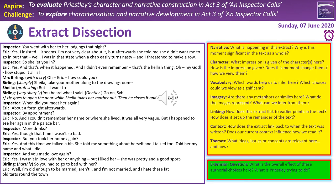That brings us to our extract for today's session. This is an important moment — it's very much about Eric being interviewed by the Inspector. This is where we hear Eric's account of what happened with Eva Smith, also known as Daisy Renton or Mrs Birling, in terms of all the names she uses during the text. The white box is the actual extract, the yellow box is a series of prompts — narrative, character, vocabulary, imagery, linking, context and themes — things we always look at when dissecting extracts for essay questions.